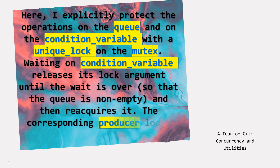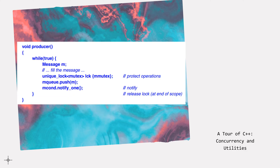The corresponding producer looks like this: void producer() { while (true) { Message M; // fill the message unique_lock<mutex> LCK(M_mutex); // protect operations MQ.push(M); M_COND.notify_one(); // notify } // release lock at end of scope }